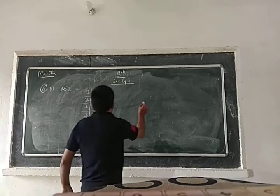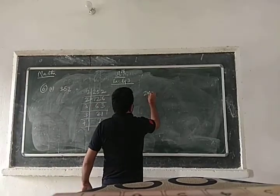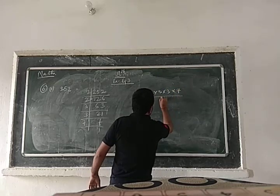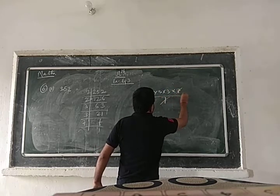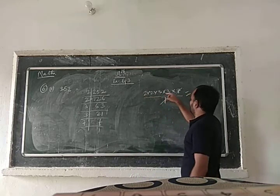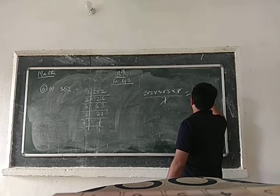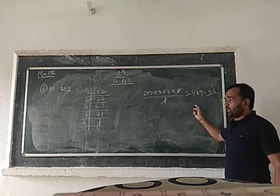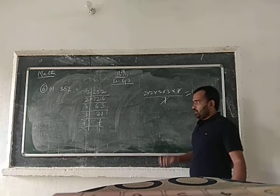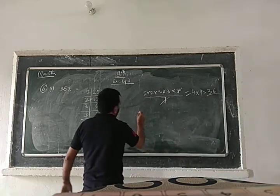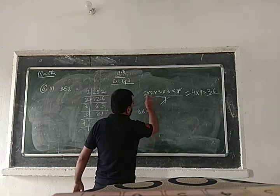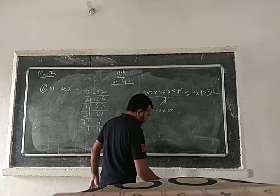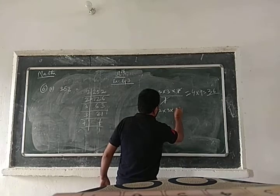So you divide by 7, leaving 2×2×3×3. Now what do you do? 4 into 9, 4 into 9 equals 36. So 252 divided by 7 equals 36.